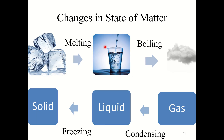A few changes in state of matter would be melting, boiling, freezing, and condensing. If we go directly from a solid to a gas, this is called sublimation. The reverse — from a gas to a solid — is called deposition. These are all physical changes because the chemical makeup of the matter is not changing, just the physical arrangement of the atoms or molecules.